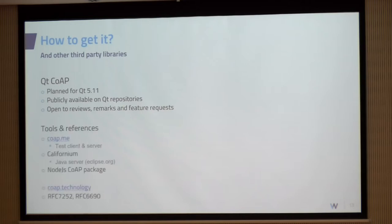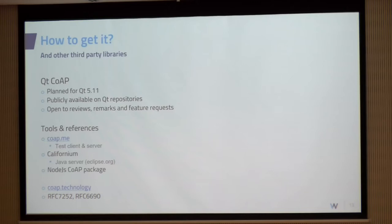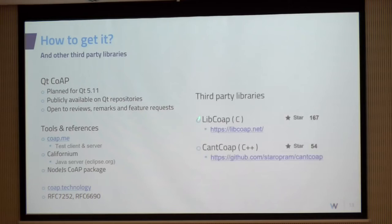How to get it: currently it's still in review, planned to be added for Qt 5.11 if all goes well. It's publicly available on the Qt repositories. If you're interested, come back to me and I can provide you the link. The license decision is still pending. It's definitely open to review remarks or feature requests — we are completely open to discuss, as is the Qt company. A few examples of tools for testing: CoAP.me is a nice test client-server already online; Californium is a heavy client made with Java; and there's a package for Node.js as well. Two other libraries you can use meanwhile are also available, the most used being libcoap.